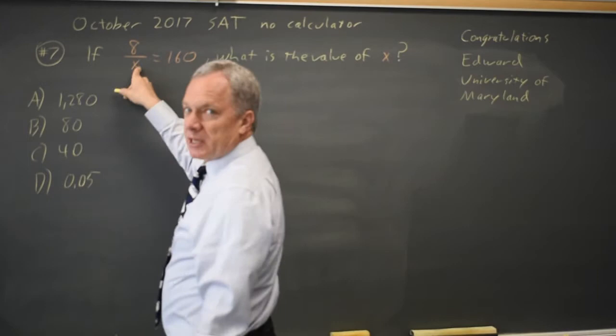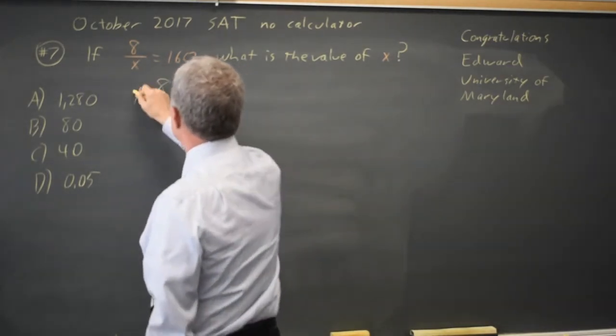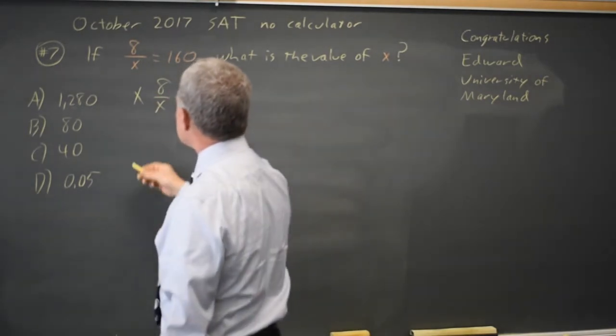Since I'm dividing by x on the left, I'm going to multiply both sides by x. We often think of this as cross-multiplying.